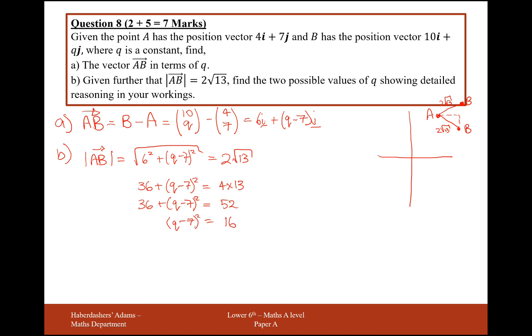So some number squared will give me 16. So q minus 7 will either equal positive 4 or negative 4.